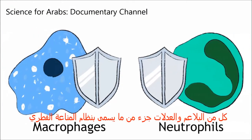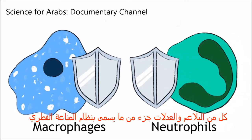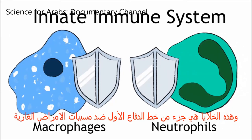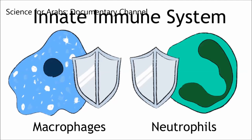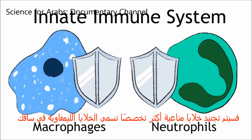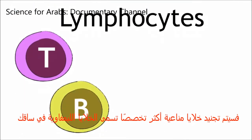Both macrophages and neutrophils are part of the so-called innate immune system, and these cells are part of the first line of defense against invading pathogens. If the bacteria cannot be controlled by members of the innate system, then more specialized immune cells, called lymphocytes, will be recruited to your leg.